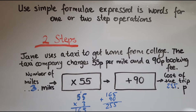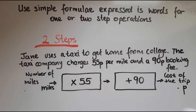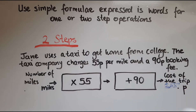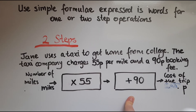It could be four miles, five miles — whatever the number of miles, if you follow these steps in order you should get the answer. Another question you might be asked is: the cost of the trip is 255 pence — how many miles was the trip? We need to reverse the process. So I'd go 255 take away 90, and then divide by 55, and that gives me the number of miles.